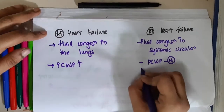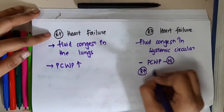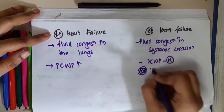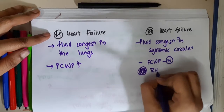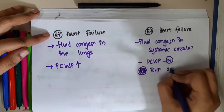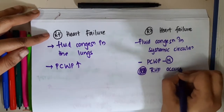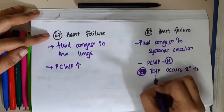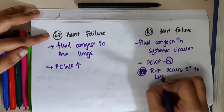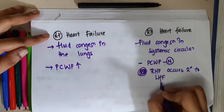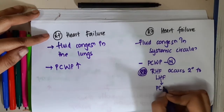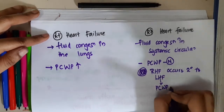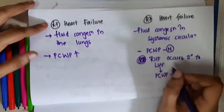But if right heart failure occurs secondary to left heart failure, then pulmonary capillary wedge pressure will be increased.